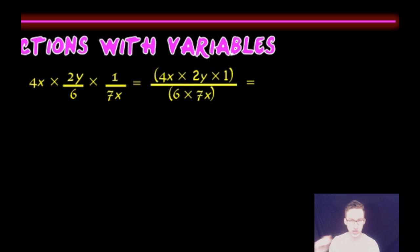Again, multiply across the top, multiply across the bottom, and then divide. So we end up with 4x times 2y times 1 over 6 times 7x. That will simplify to 8 times xy over 42x, which will simplify further to 4y over 21.